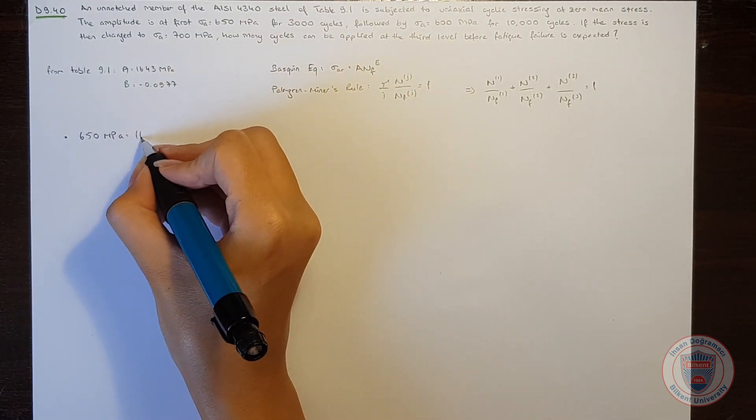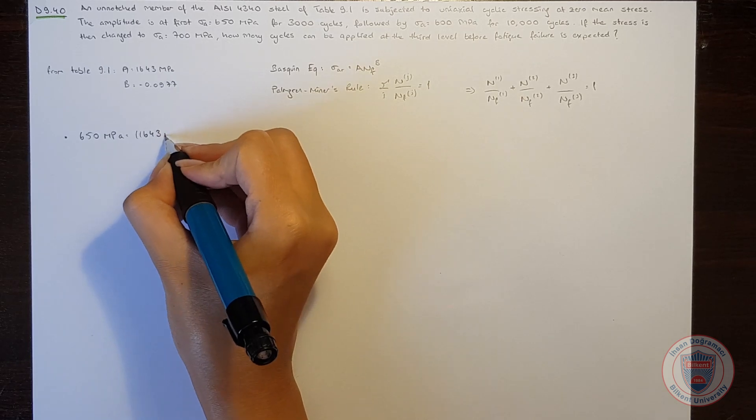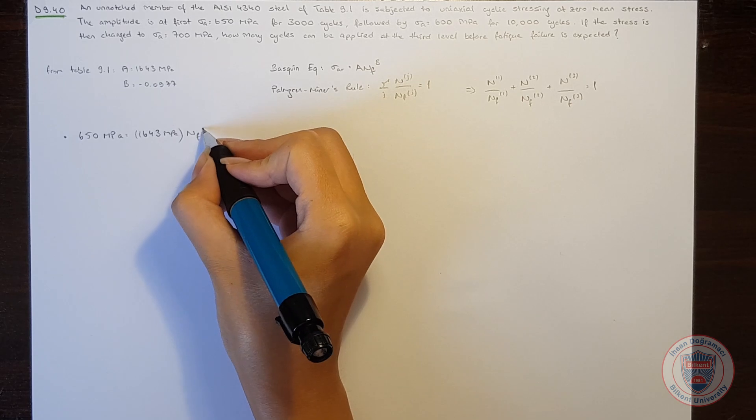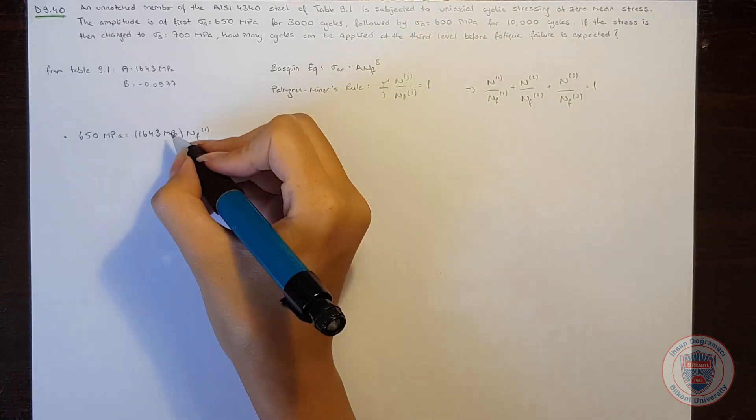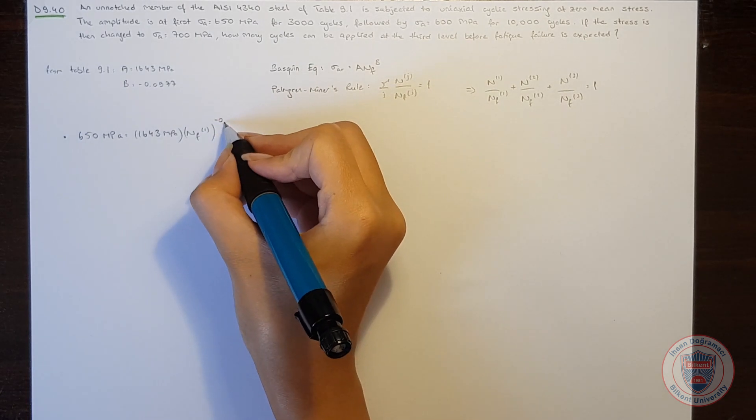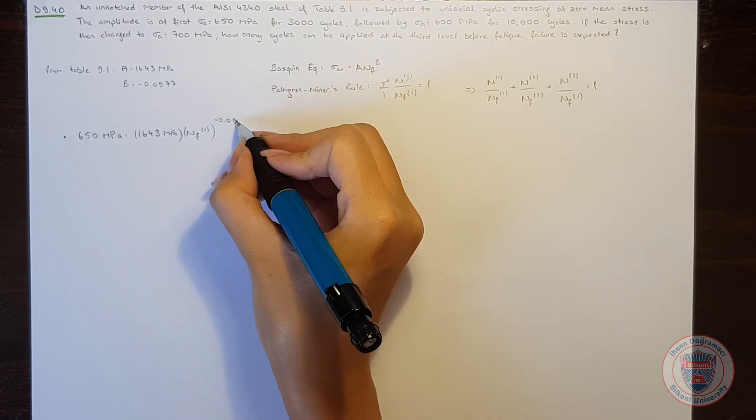it will be equal to 1643 MPa times the number of cycles at the first level to the power of minus 0.0977.